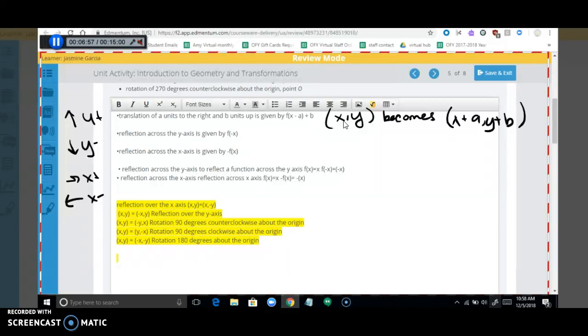So this is what I want you to write for this first answer. Even though this is right, this makes it a little easier. Reflection across the Y axis, what I want you to put here is that XY becomes negative XY. And then here, across the X axis, you're going to do XY becomes X, negative Y.